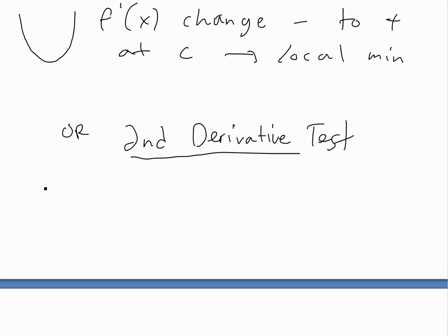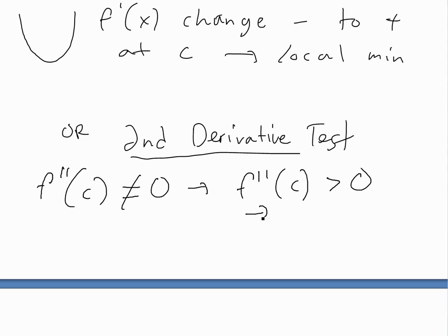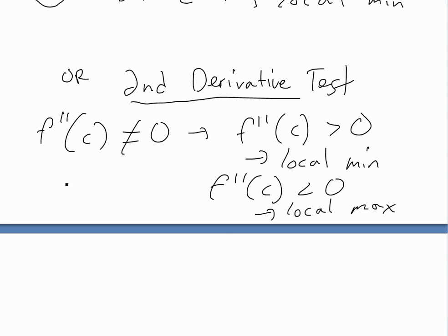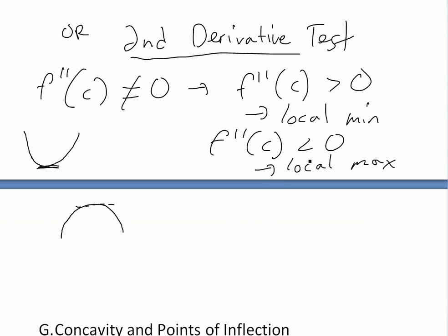The second derivative test applies when f double prime of c is not equal to zero. If f double prime of c is greater than zero, this is a local minimum — meaning the rate of change of the slope is increasing, so you have a concave up shape. If f double prime of c is less than zero, then this is a local maximum — that's concave down. You can see my other video on the second derivative test and first derivative test for more clarification.